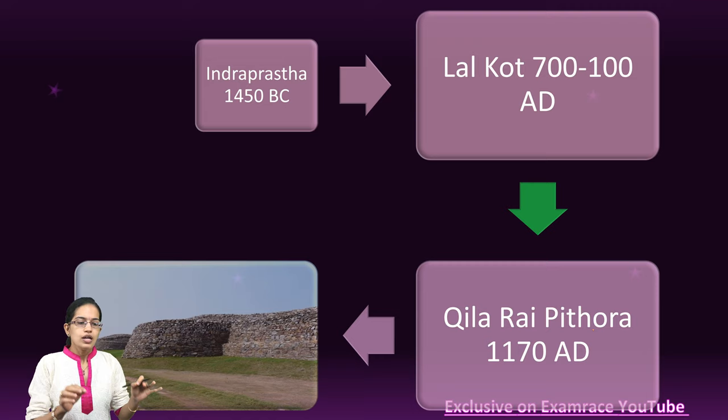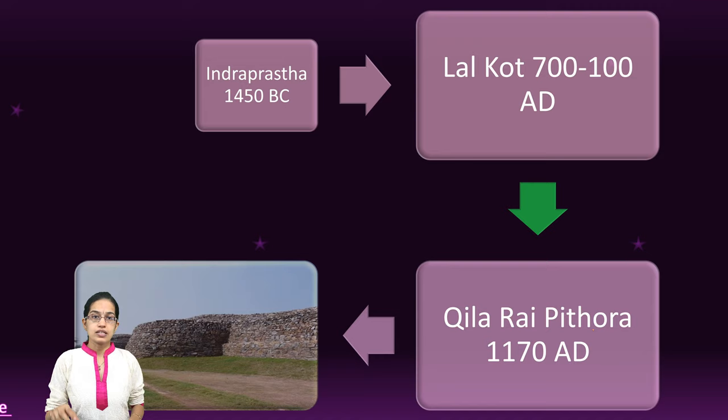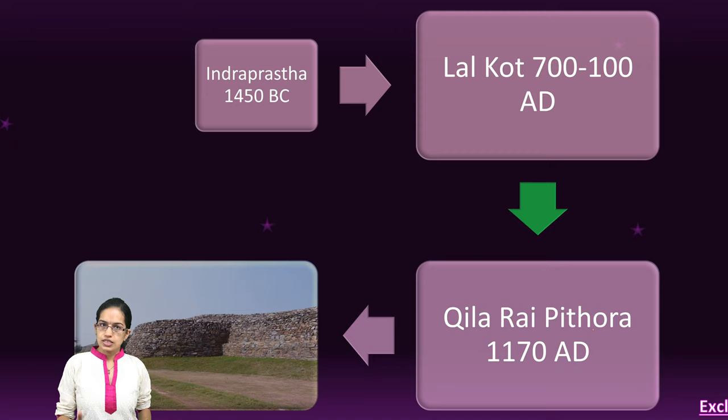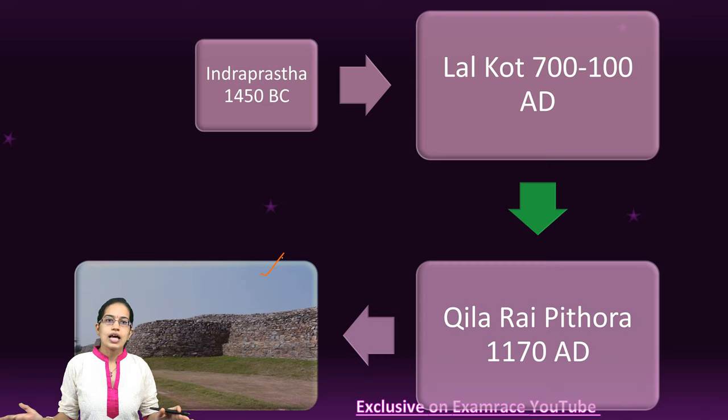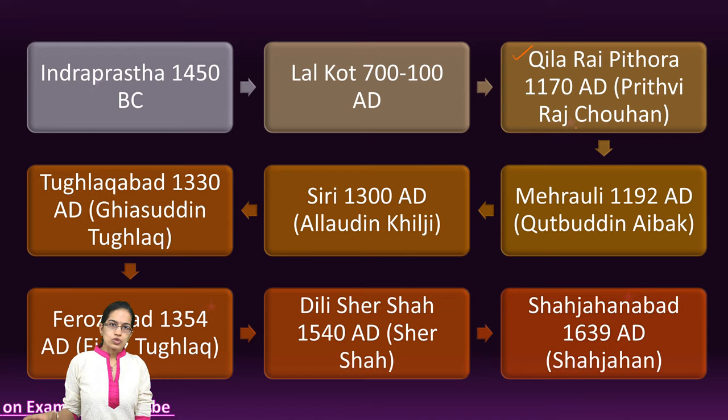Prithviraj Chauhan captured the region of Lalkot, extended it, and built Kilarai Pithora — a unique example of his victory. It was extended up to the present-day Ajmer in Rajasthan, and the region of Qutub Minar was also enclosed within it. This is what Kilarai Pithora looked like.